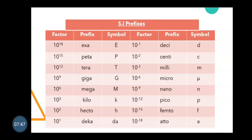For negative power multipliers: 10^-1 is deci (symbol: small d); 10^-2 is centi (symbol: small c); 10^-3 is milli (symbol: small m); 10^-6 is micro (symbol: small µ); 10^-9 is nano (symbol: small n); 10^-12 is pico (symbol: small p); 10^-15 is femto (symbol: small f); 10^-18 is atto (symbol: small a).